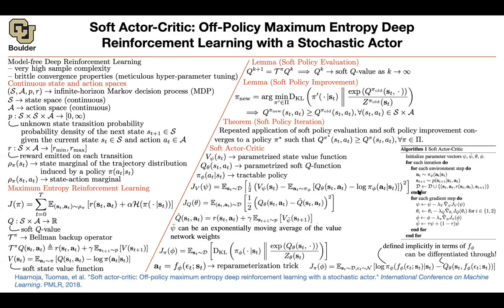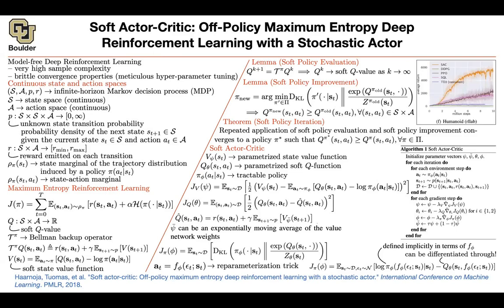Here's the algorithm. You have your environment; you take actions based on your policy and create your dataset. Once you have your dataset, you keep optimizing the objectives: optimize your value, optimize your Q, and optimize your policy. Then keep a moving average of psi. If you compare soft actor-critic to other algorithms on a humanoid problem, deep deterministic policy gradient is the green line and PPO is the brown line, reporting average return. Soft actor-critic converges much faster and gives much better return.